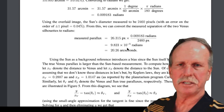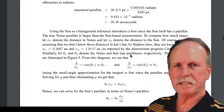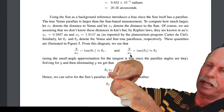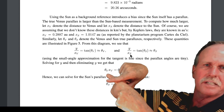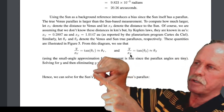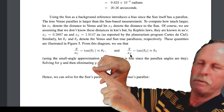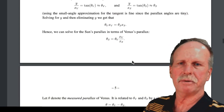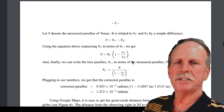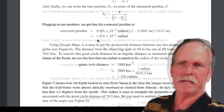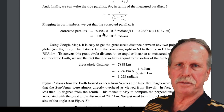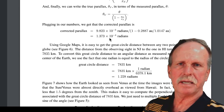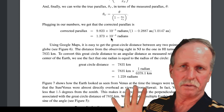This has to be corrected, because the sun itself has a little parallax. If you were to take your two observers and look at the silhouette of Venus, it's going to cross at Venus. However, if those same two observers looked at the center of the sun, it would cross at the center of the sun — that's the solar parallax, and that has to be taken into account for an accurate measurement. He was able to do that, going from 9.823 times 10 to the negative 5 radians to 1.373 times 10 to the negative 4 radians.